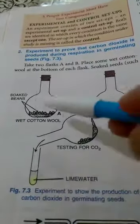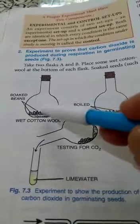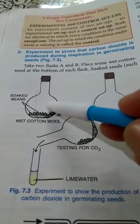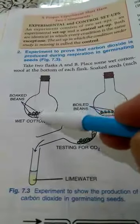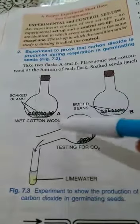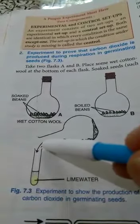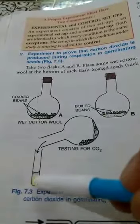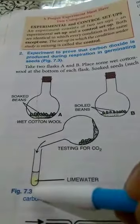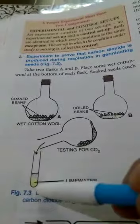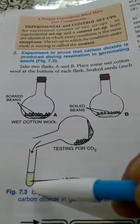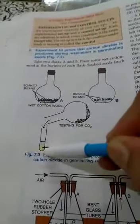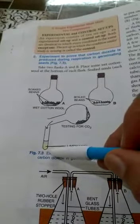Reason for this is because we have taken germinating seeds in conical flask A. They will respire and produce carbon dioxide. Now carbon dioxide gas is heavier than air, so it will move towards the bottom of the test tube and react with lime water. Carbon dioxide turns lime water milky, so color of lime water will change here.